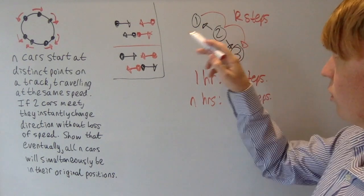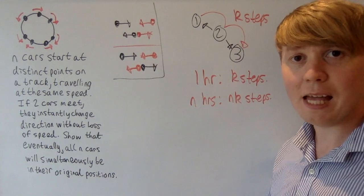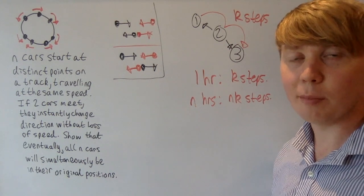If you go around two n steps, you've gone around twice, but you're again back to where you started. So if you go around kn steps, then you are back to where you started.